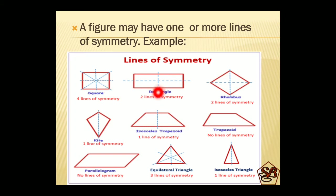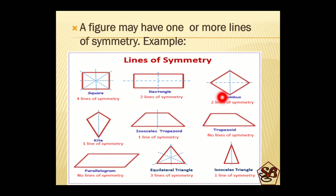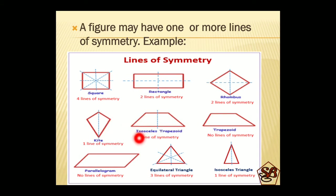A rectangle has two lines of symmetry — vertical and horizontal. A rhombus also has two lines of symmetry — vertical and horizontal. A kite can have only one line of symmetry. If we try to divide it horizontally, those two parts will not be equal or identical. An isosceles trapezoid has one line of symmetry.